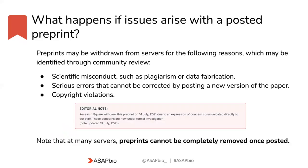So what happens if issues arise with a posted preprint? If a preprint posted on a preprint server has major issues following community comments, preprint servers have mechanisms in place to address these issues. Some of the issues that may prompt a withdrawal include: specific misconduct, such as plagiarism or data fabrication; serious errors that cannot be remedied by the authors posting a correction to the preprint; and copyright violations. If a preprint server withdraws a preprint, this is an example of a banner that might appear at the top of that preprint indicating its withdrawal. Note, however, that in many cases, preprints may be withdrawn but not completely removed.